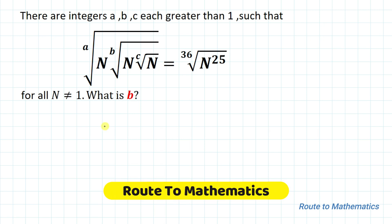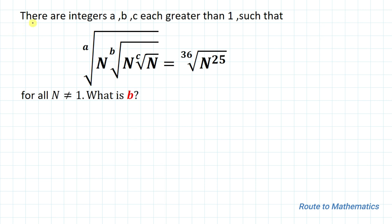Hello everyone, welcome to Root2Mathematics. In this video we are going to solve an interesting Olympiad question. The given question is: are there integers a, b, c each greater than 1 such that the ath root of n multiplied by the bth root of n multiplied by the cth root of n equals the 36th root of n to the power 25, for all n not equal to 1? We are asked to find the value of b. Without any delay, let's start the solution.